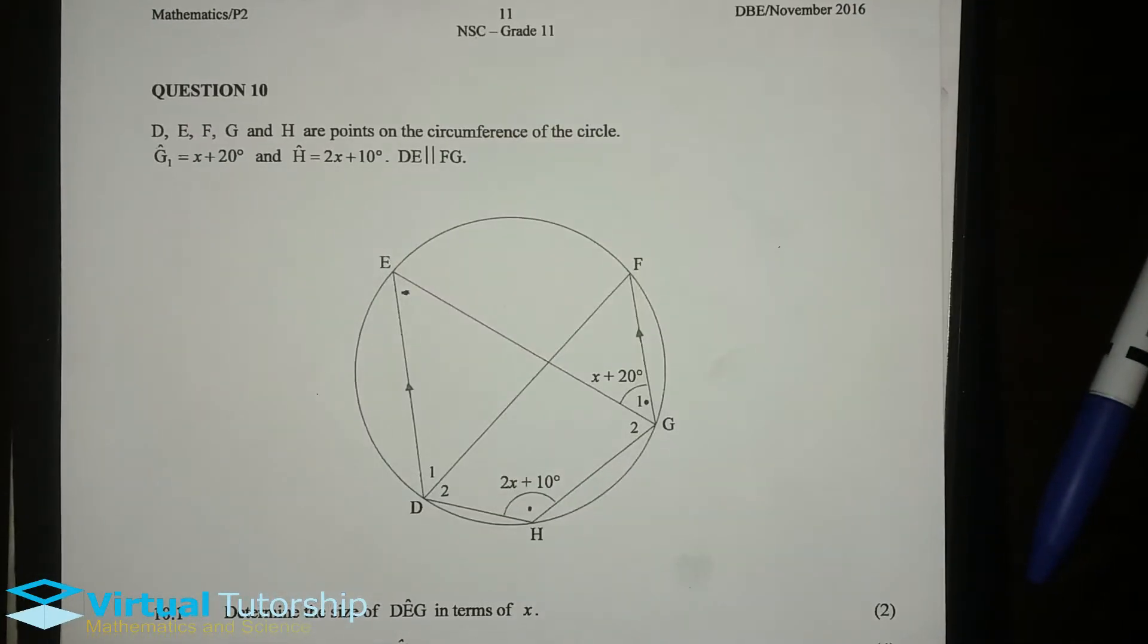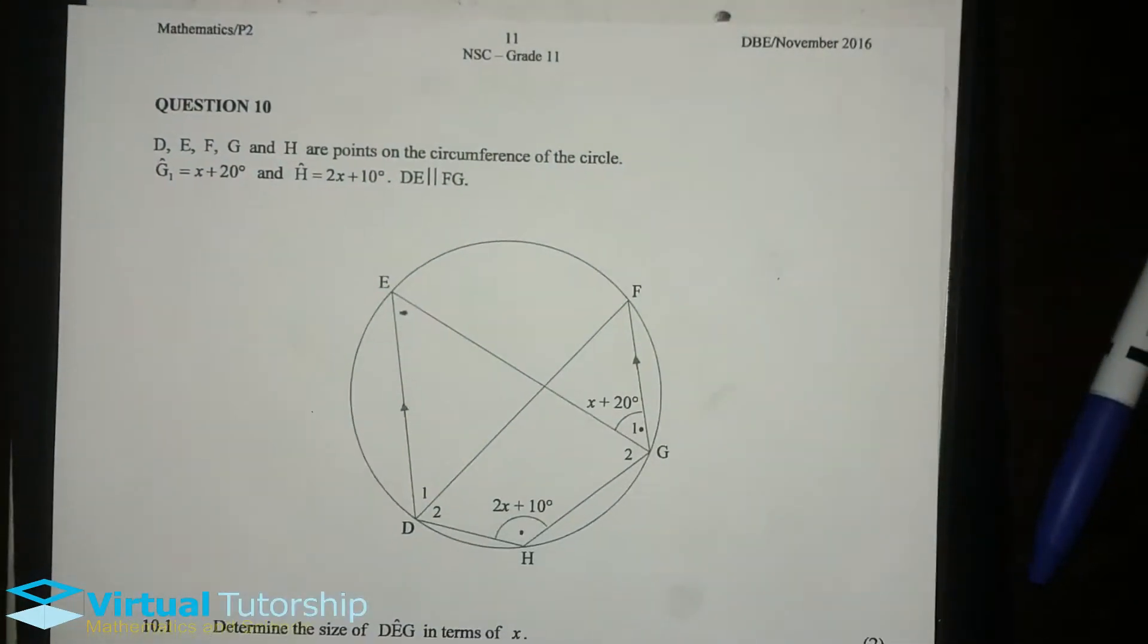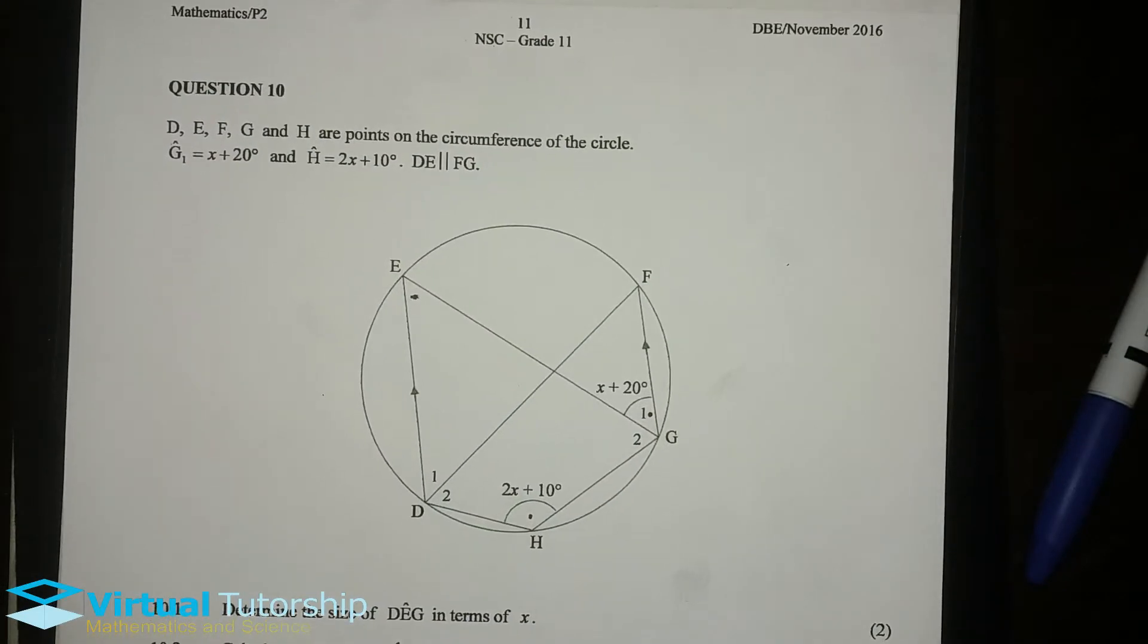Okay, now. It's question 10, Euclidean Geometry Problem. It's a question from a grade 11 question paper, the Mathematics Paper 2, November 2016. So, question 10.